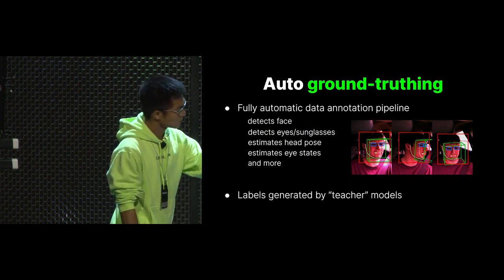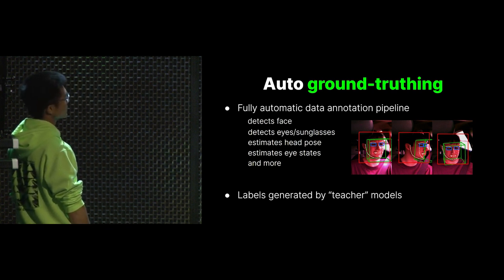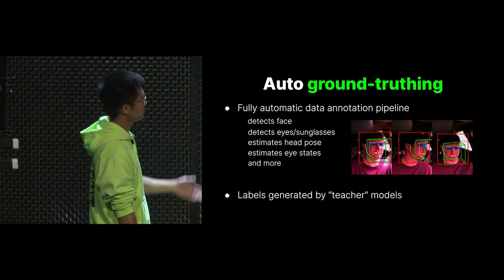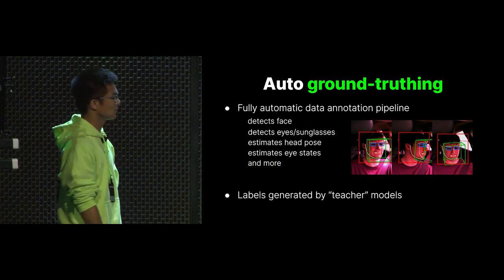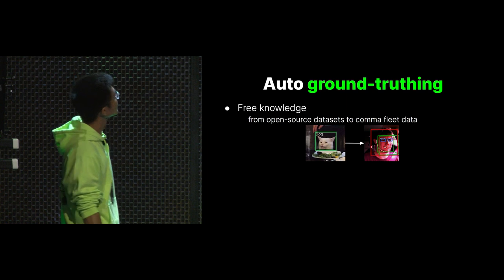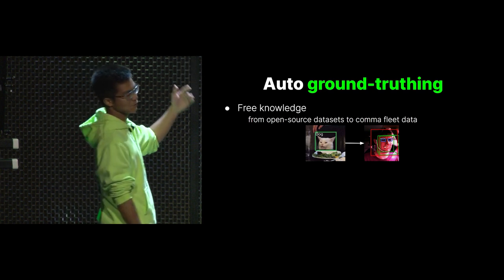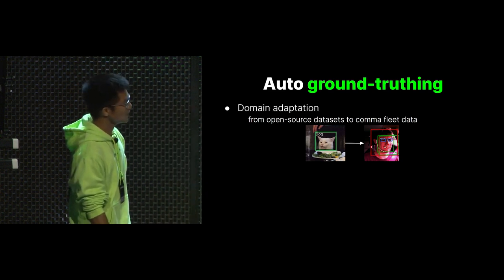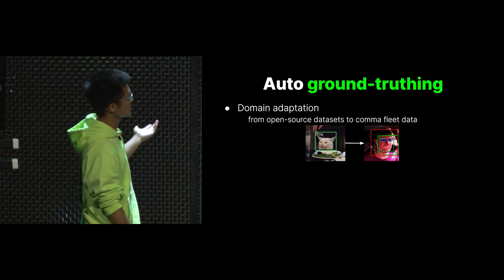Here are some examples of the auto ground-truthing stack in action, where you can see faces being detected, the pose being accurately estimated, and also the eyes and whether they're closed. What's actually doing all these things are what we call teacher models that we train separately to work specifically on our dataset, using a technique called transfer learning — meaning the knowledge of these models is obtained from somewhere else, in this case open-source datasets. You can't just easily train models on those open-source datasets because they know nothing about our data, which brings us to the idea of domain adaptation: we need to augment those open-source datasets to make them look somewhat similar to what's in our dataset, then we can start training models on them.